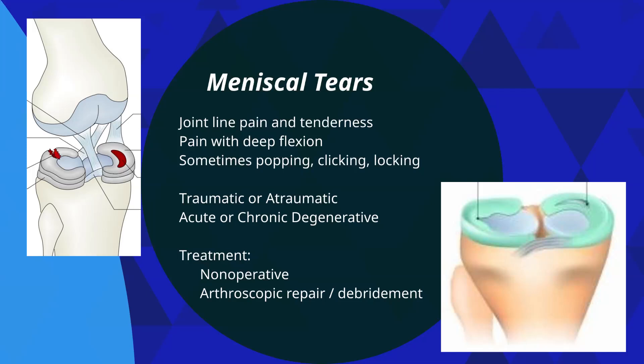Symptoms of a meniscal tear include joint line pain and tenderness — right at the joint line between the bones. If your pain is there and it really hurts when you push on that spot, that could be a meniscal tear. Patients commonly have pain with deep flexion — deep knee bending like squats, lunges, or kneeling. Because meniscal tissue can get between the bones, patients can experience popping, clicking, and sometimes true locking of the knee. These tears can be acute or chronic degenerative — acute tears are more common in younger patients, while chronic degenerative tears are incredibly common in older patients.